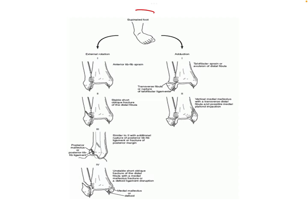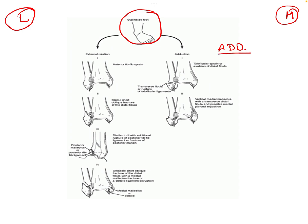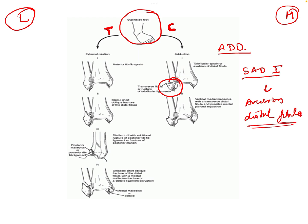First we discuss the supinated foot. This is the medial side and this is the lateral side. In the adduction type of force, while the foot is in supination, the medial structures are in compression and the lateral structures are tensed, so injury begins from lateral to medial. Supination-adduction type 1 (SAD1) causes a lateral side injury: either an avulsion fracture of the distal fibula, or in less severe cases only an anterior talofibular ligament injury — injury only to the lateral structures.